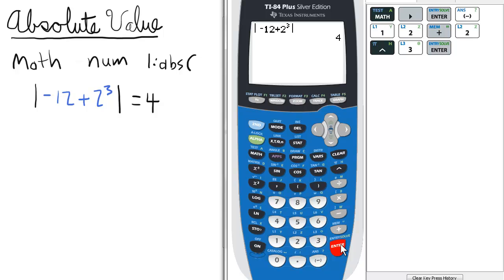If you do happen to have this operating system, there is a shortcut. We can press Alpha and Window for F2, and select 1, which is the ABS.